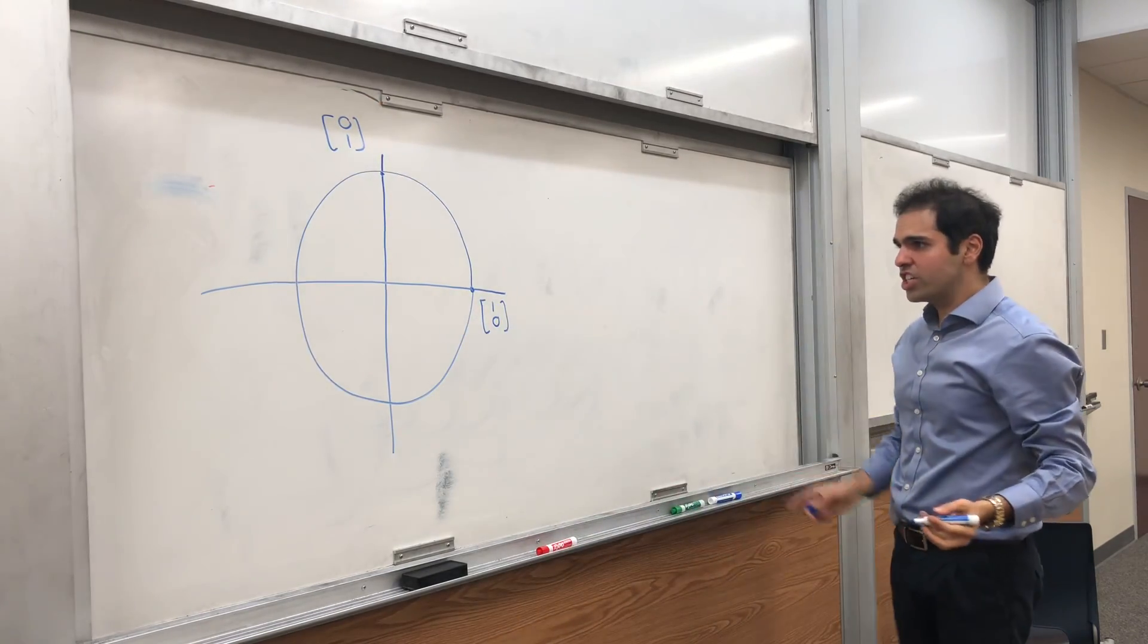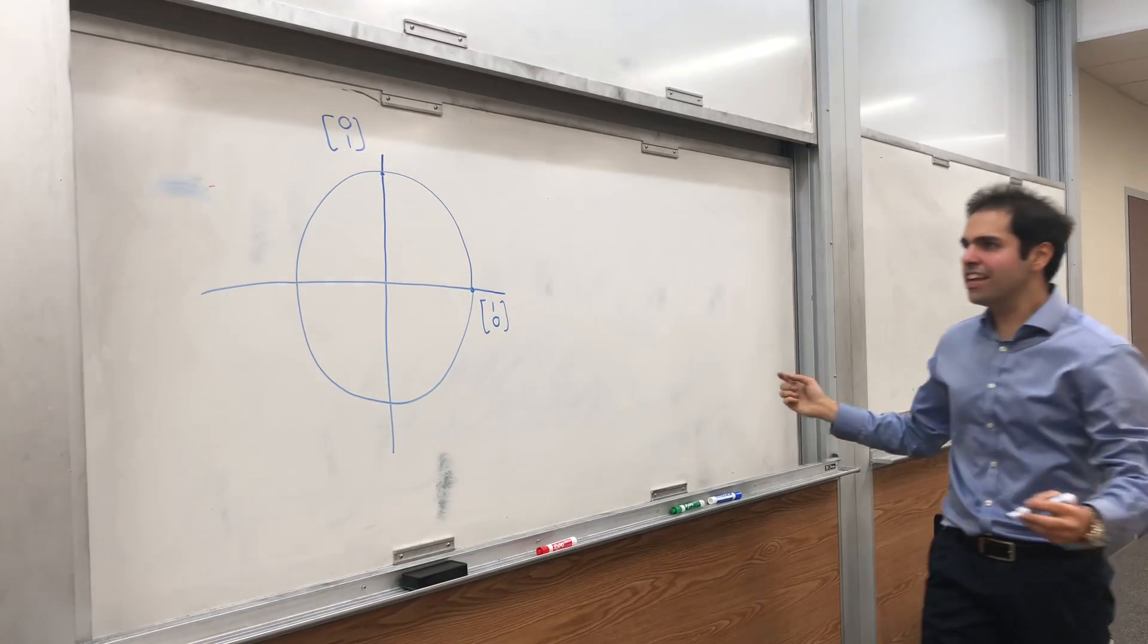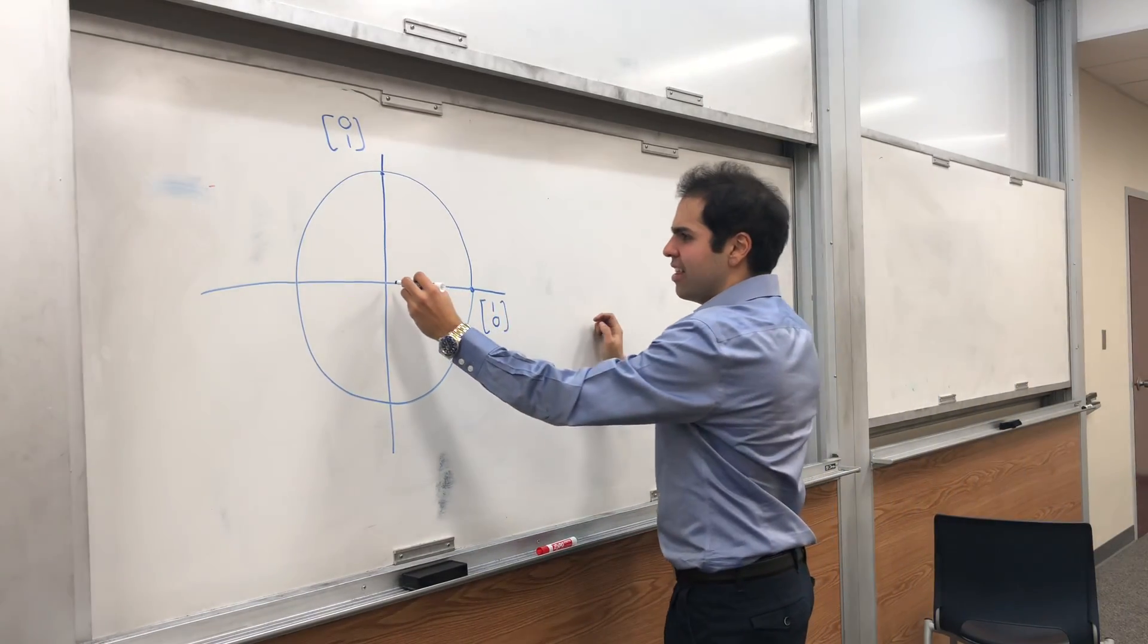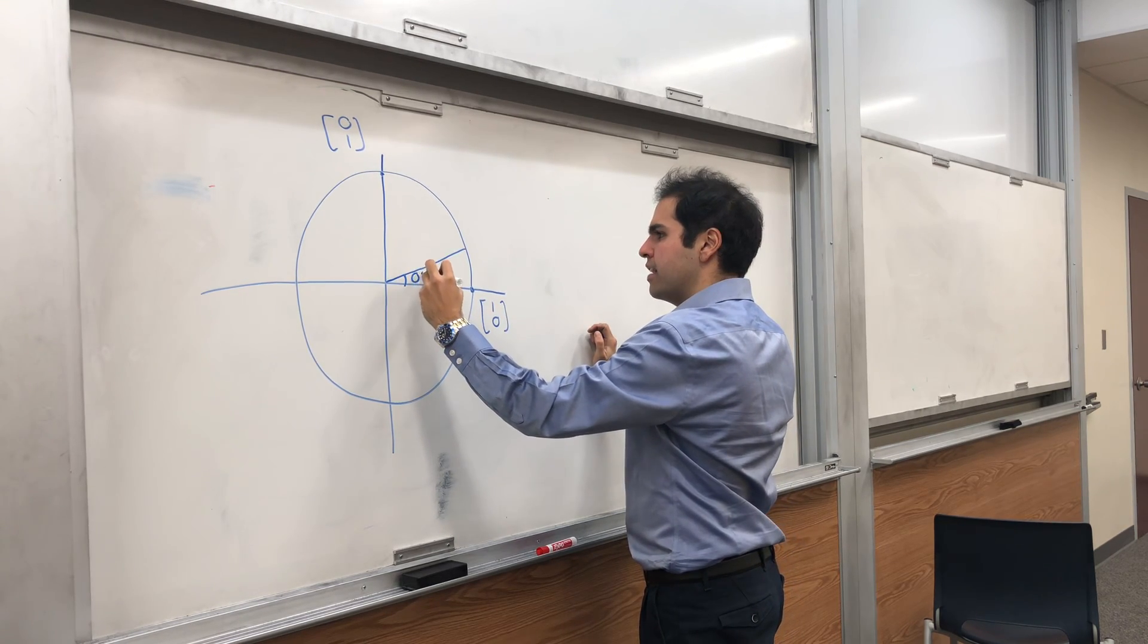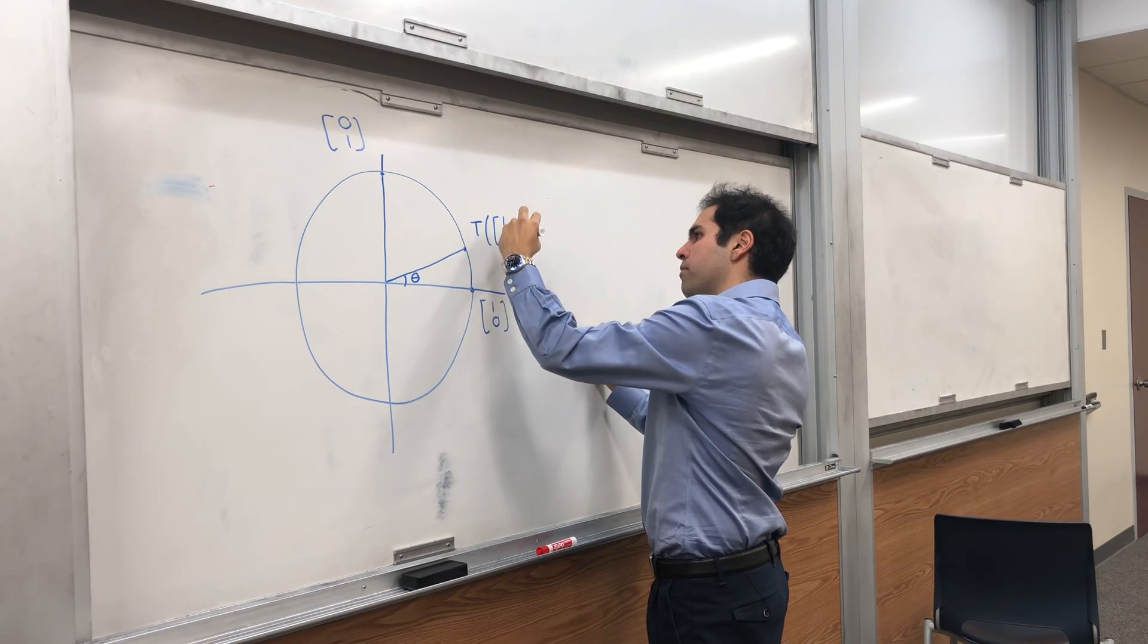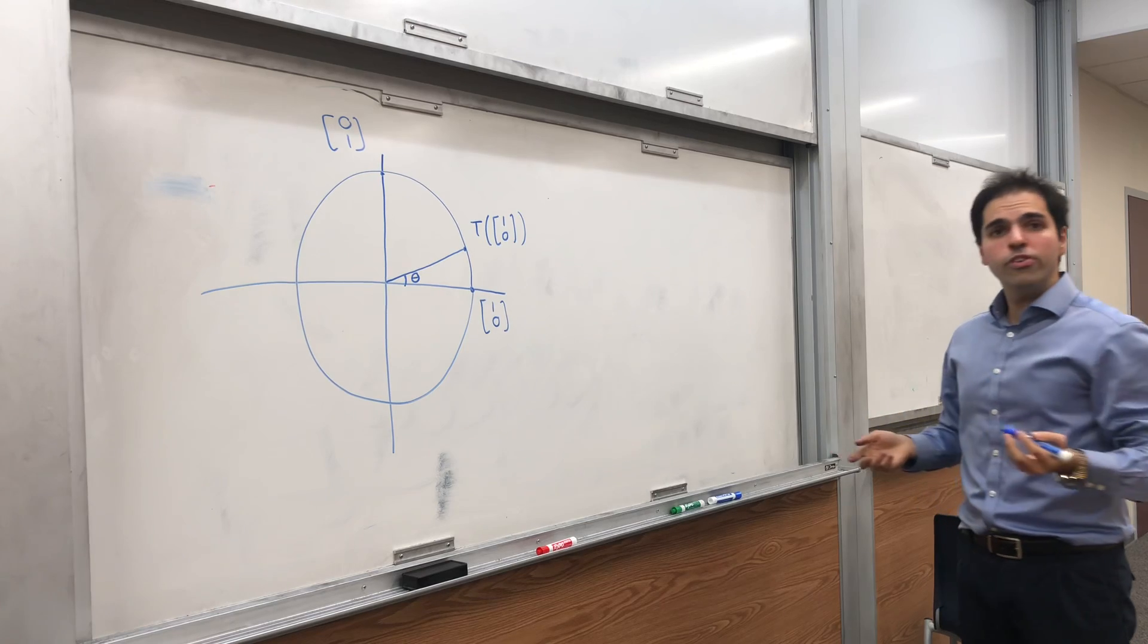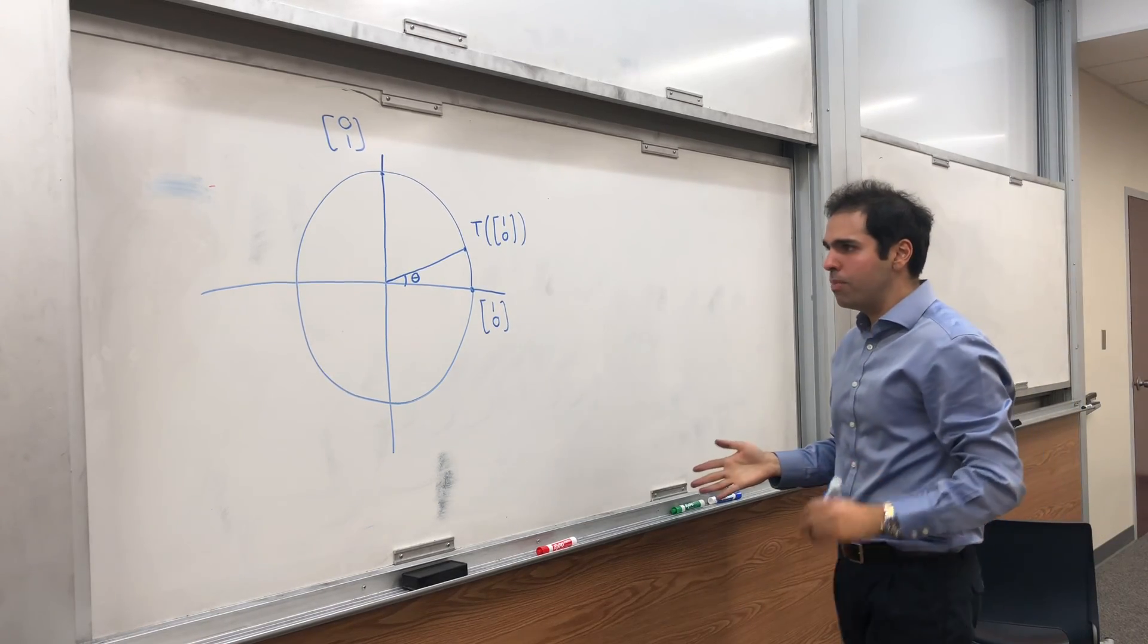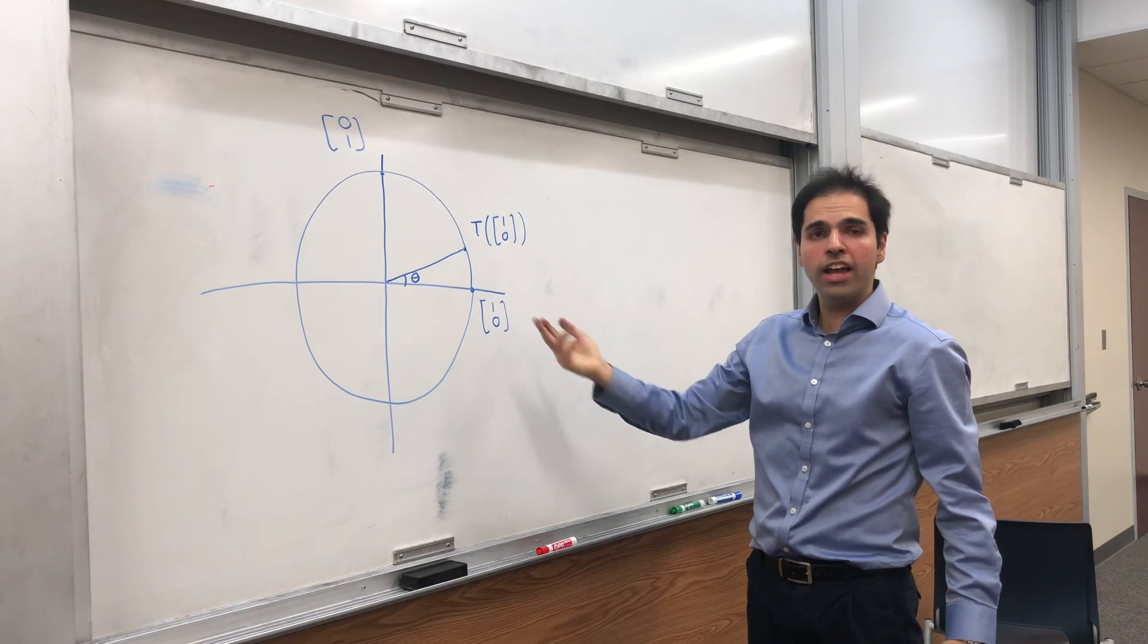And the question is then, what happens if I rotate (1,0) by theta radians? Then we get a new point here. So this is theta, and we get this new point, T of (1,0).